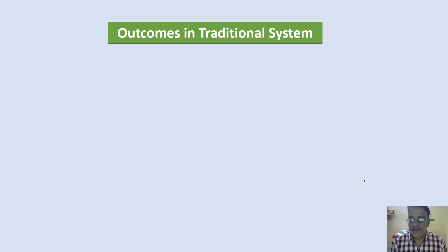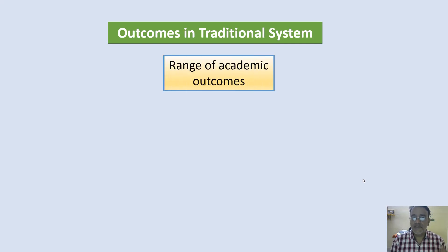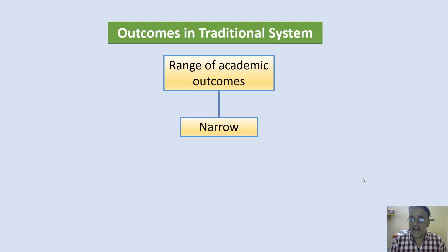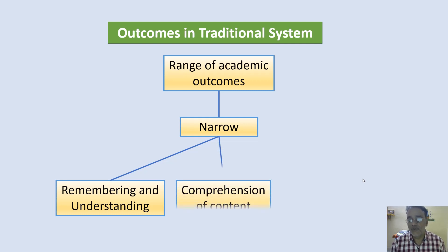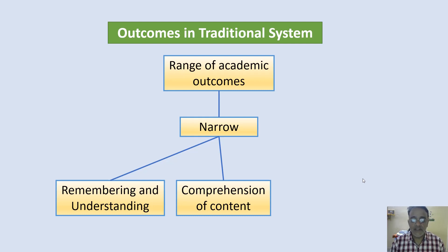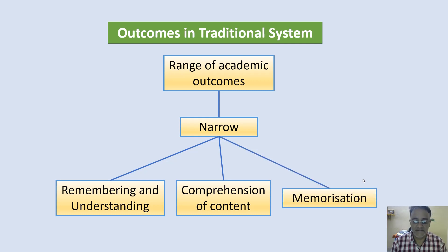Let us start with outcomes in the traditional system. The traditional system is focused on a narrow range of academic outcomes where remembering and understanding — that is, low-order thinking skills as per Bloom's taxonomy — along with comprehension of content and memorization, are considered significant.